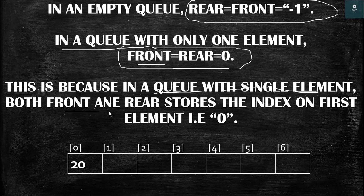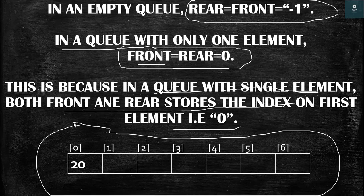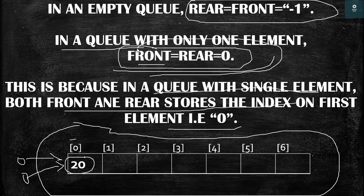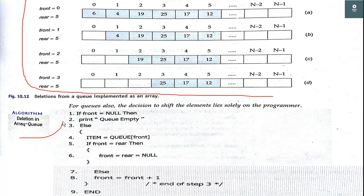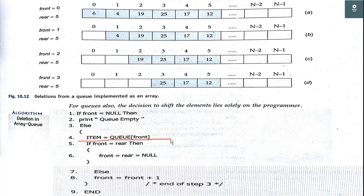In a queue with a single element, both front and rear store the index of the first element, that is 0. In this example we have an array queue with only one element at 0th index, so front and rear both point to index 0. This condition will be used in the program. The algorithm for deletion has three conditions: first, if the queue is empty then front equals minus 1; second, if the queue has only one element; and third, for a non-empty queue.